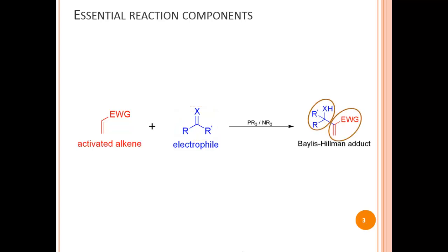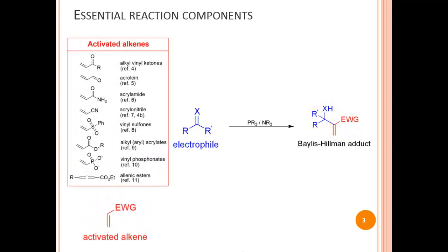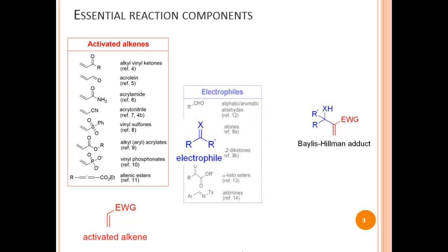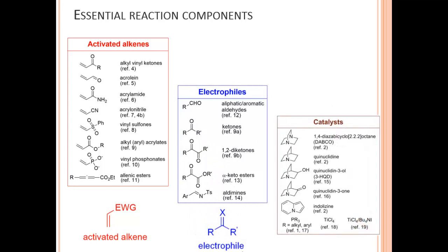Coming back to the Bayliss-Hillman reaction: as can be seen, a variety of alpha-beta unsaturated compounds can serve as the activated alkene, various prochiral substrates can serve as the electrophile, and either phosphines or tertiary amines can be used as catalysts to speed up the process.